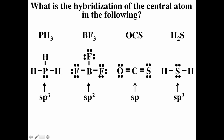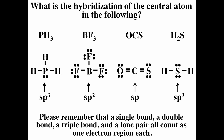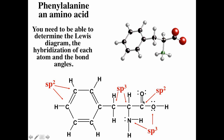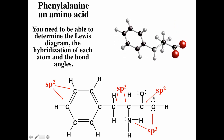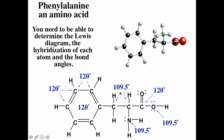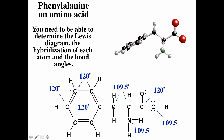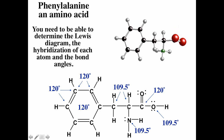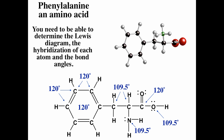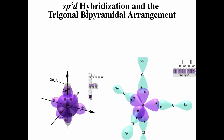You can determine hybridizations for more complex molecules simply by counting regions of electron density. Three regions around a carbon means SP2; four regions means SP3. Similarly for bond angles: four regions give tetrahedral geometry with bond angles of about 109.5°, and three regions give trigonal planar geometry with bond angles of about 120°. There are three exceptions to the octet rule: boron and aluminum are happy with six; elements in the third row and lower can have more than eight; and if you have an odd number of electrons, not all atoms can have noble gas configuration.